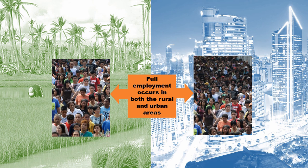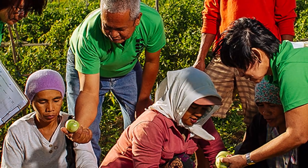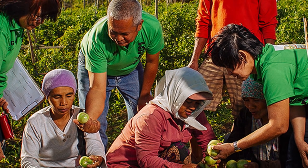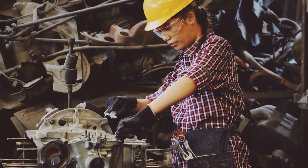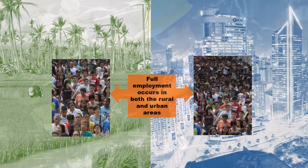Full employment occurs in both the rural and urban areas, meaning there are fewer unemployed people in the rural areas, and at the same time the urban areas also reach full employment. So rural to urban migration will benefit the whole economy — both sectors will have full employment, and in the absence of surplus labor, wages will also increase in both sectors because labor becomes more valuable.